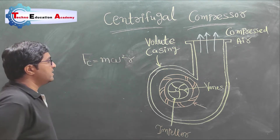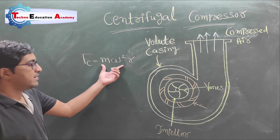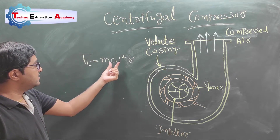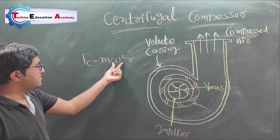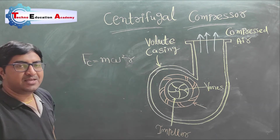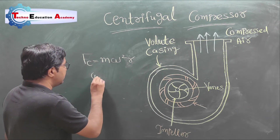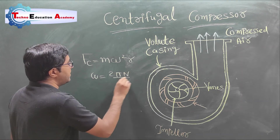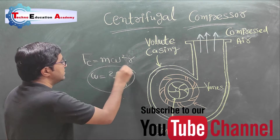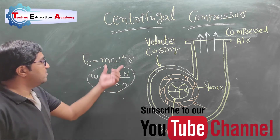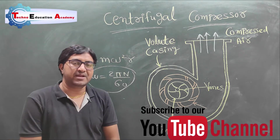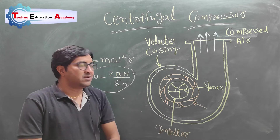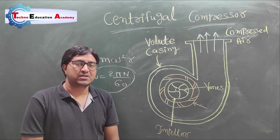The equation of centrifugal force is Fc = mω²r, where m is the mass, ω is the angular velocity, and r is the radius. The equation of ω is 2πn/60. So the centrifugal force depends on speed, and this compressor works on centrifugal force — that is why it is called a centrifugal air compressor.